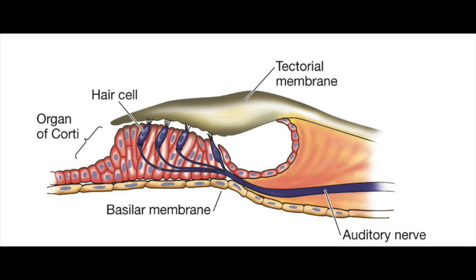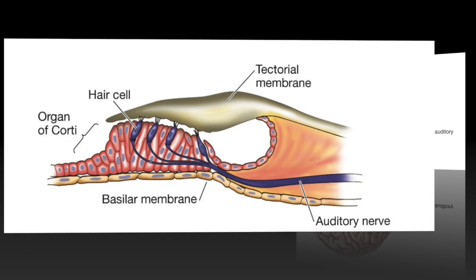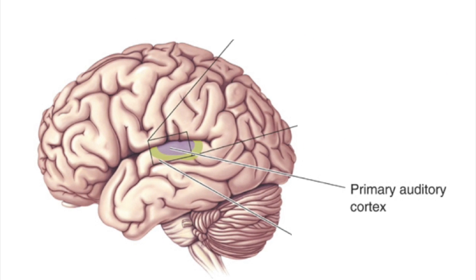The electrical signals go from the hair cells via the auditory nerve to the auditory cortex in the brain, where sound is perceived.